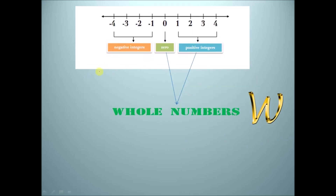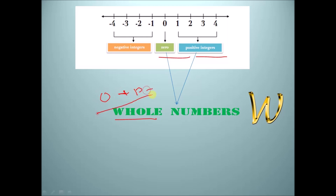Next is whole numbers. So 0 plus positive integers, that is natural numbers, are whole numbers. These are represented by W.